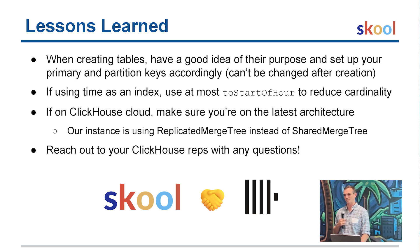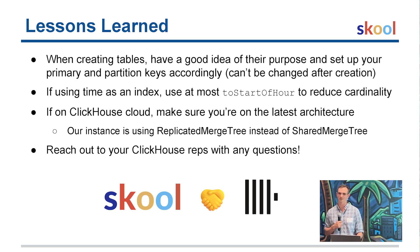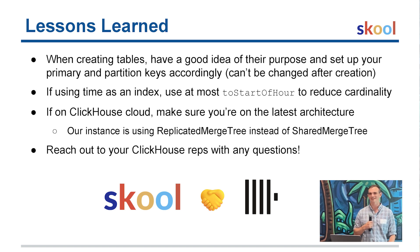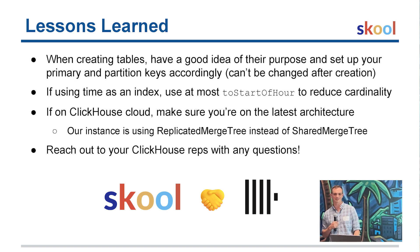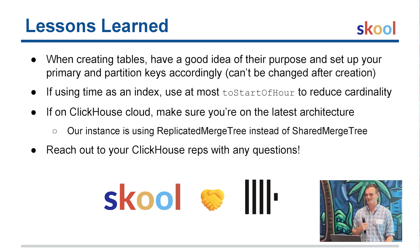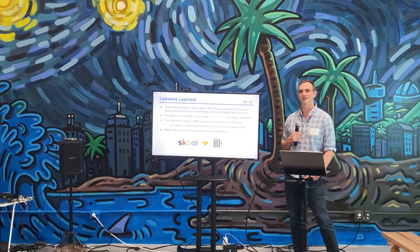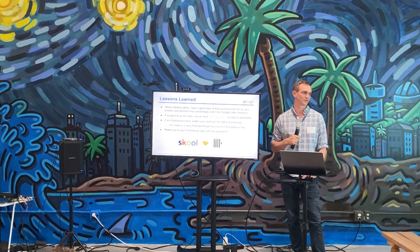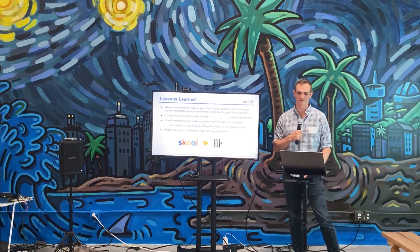We're using ClickHouse Cloud, and one thing we discovered is that when we set up our instance in 2023, it was on the old single-node architecture. Since then, they've moved to a shared-nothing architecture, and you have to explicitly upgrade at some point. We haven't done that yet, but apparently there are performance improvements that will address some of the issues we've been seeing — so we need to get that scheduled. That leads to the last point: talk to your ClickHouse Cloud reps. They're a wealth of knowledge and want to make sure you're successful. We've gotten tips on the shared architecture upgrade, index design, and other tricks. Communities like this and ClickHouse reps are both great resources.